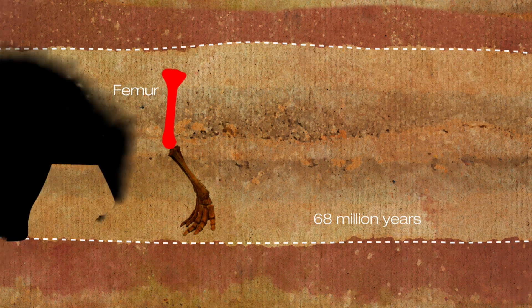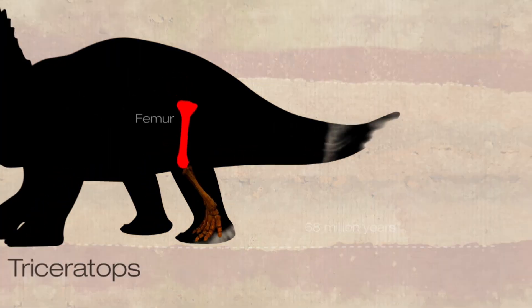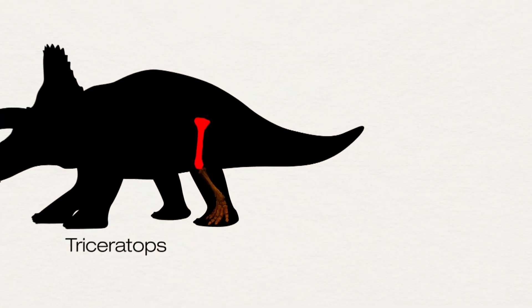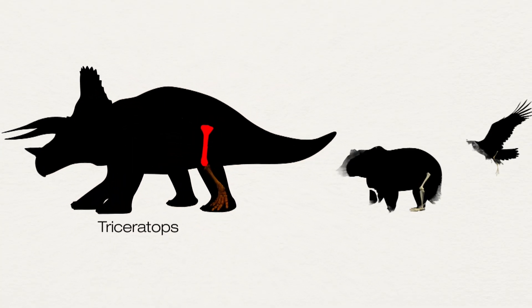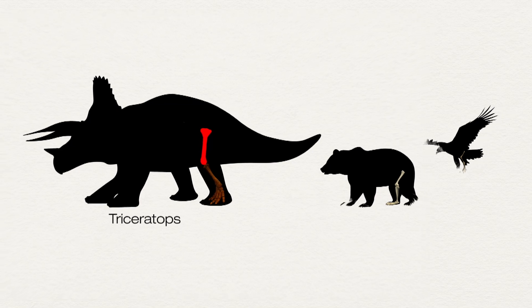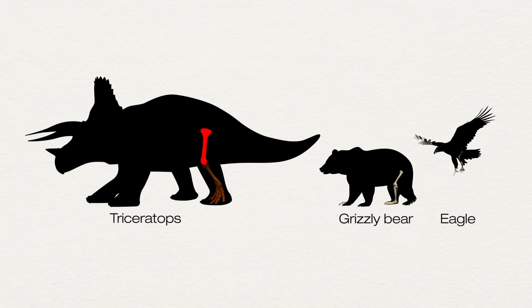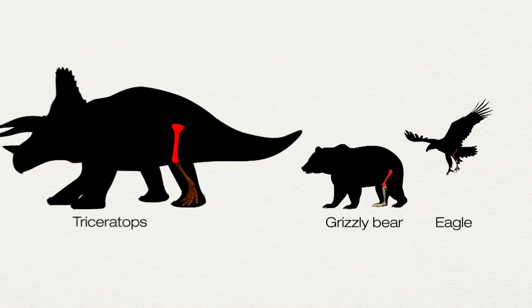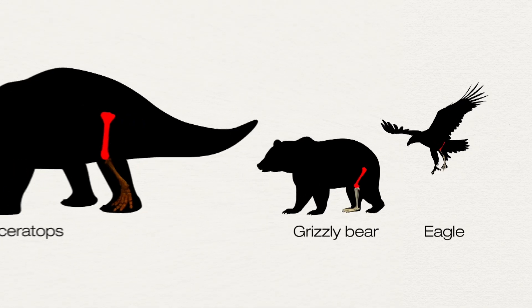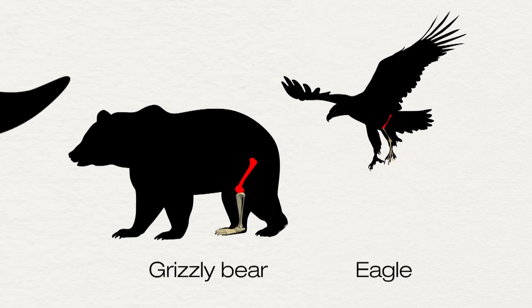And you can compare it to the femurs of animals both extinct and alive today, which will give you an idea of how those organisms are related, and how the femur in particular has been adapted to suit new organisms in new environments over and over again.